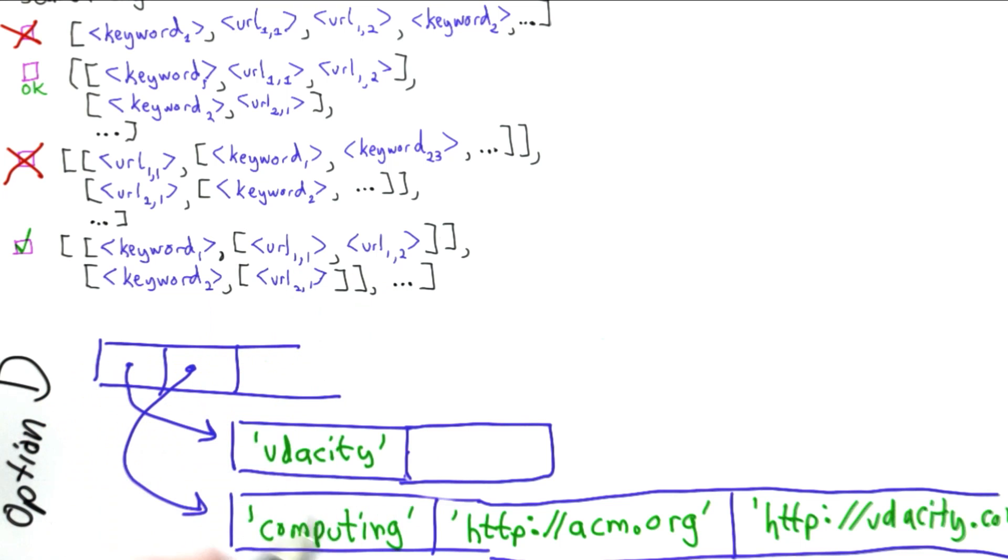It has the keyword followed by a list of URLs. So that'll be another list, and now we have a list of URLs.